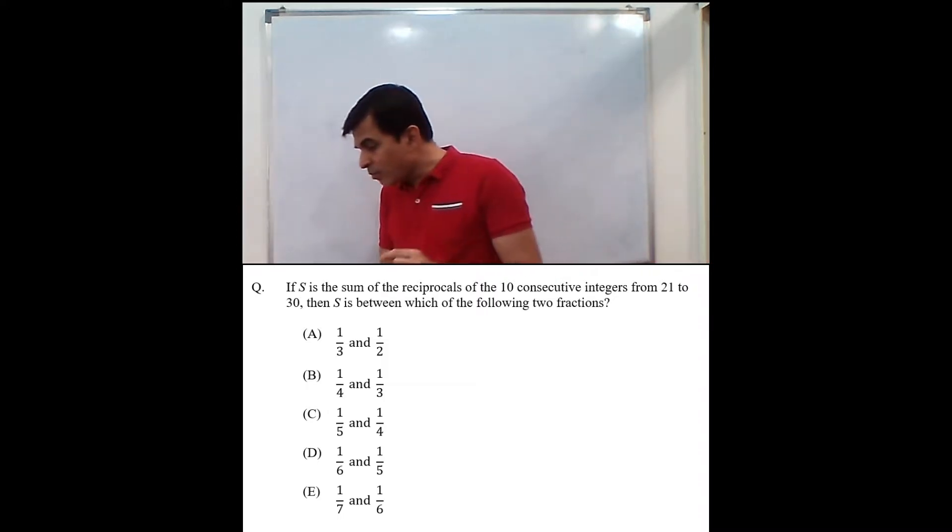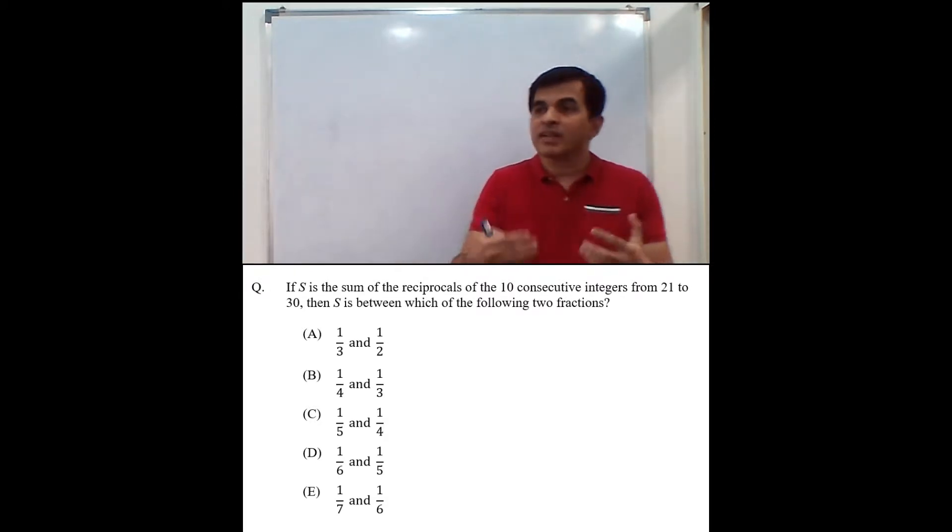If S is the sum of the reciprocals of the 10 consecutive integers from 21 to 30, what is S being defined as sum of the reciprocals of the integers from 21 to 30?